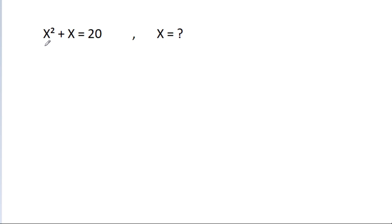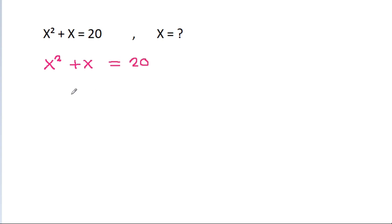We have given that x squared plus x is equal to 20, then x is equal to what? We have x squared plus x is equal to 20, and it is x squared plus x minus 20 is equal to 0.